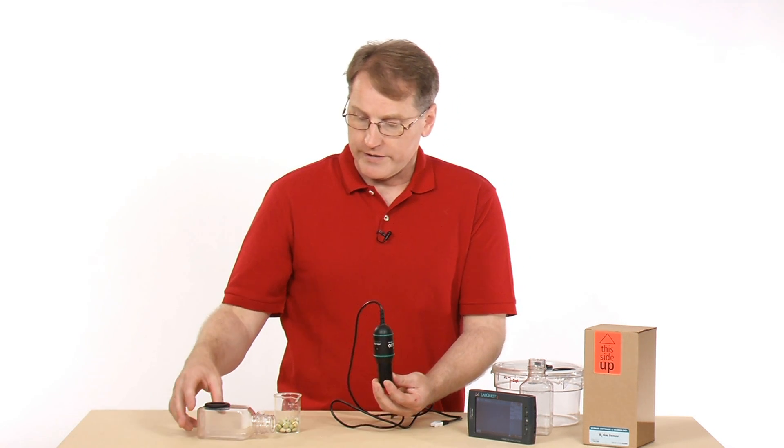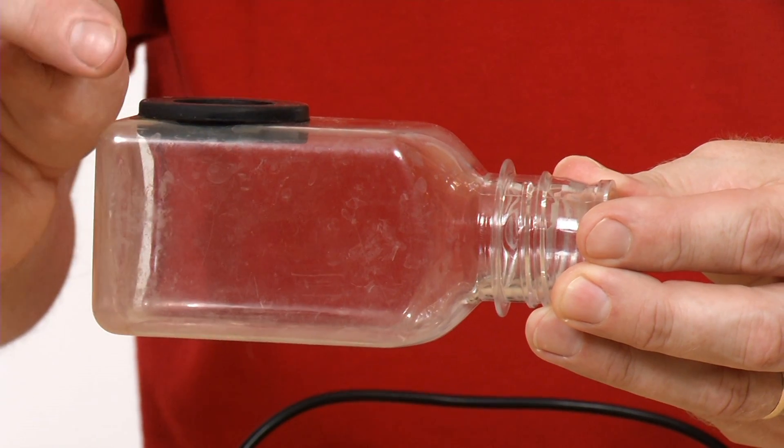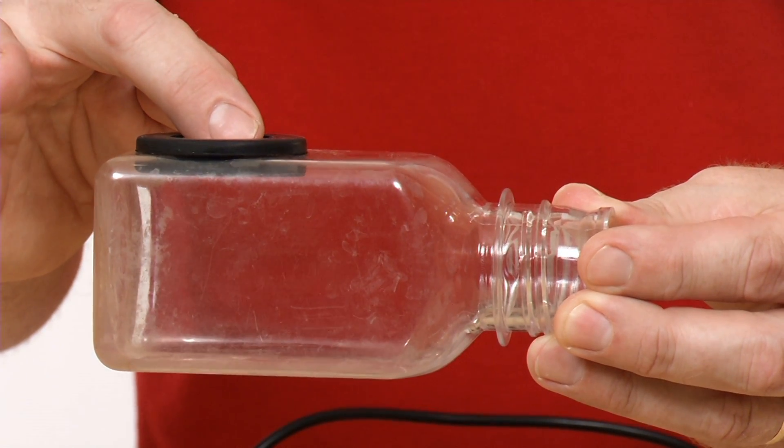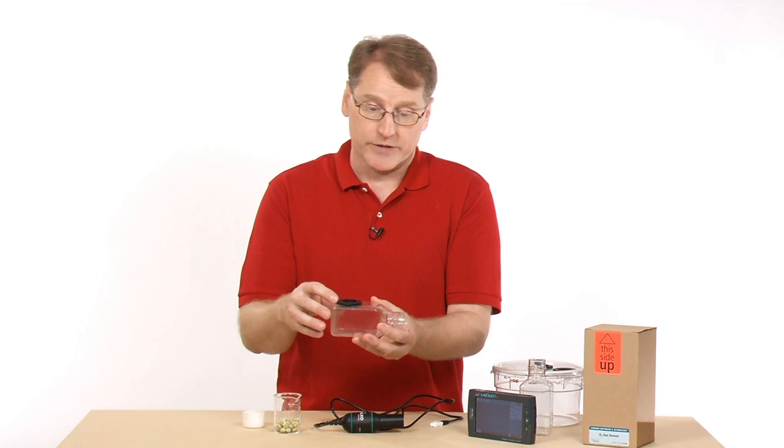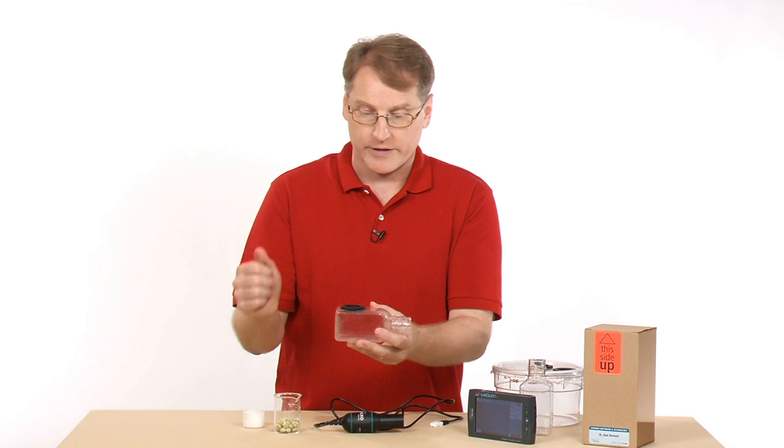Another option, though, is the BioChamber 250. And so this is the Nalgene bottle with an extra hole for a sensor to go in here. You might use this in conjunction with the CO2 sensor. So you could put the CO2 there and the oxygen in there if you wanted to.